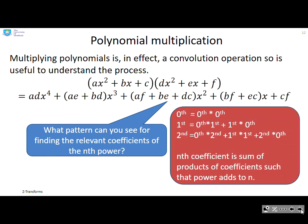The question you need to look at is what pattern can you see for the coefficients of the nth power? Let's look at the pattern. To get this coefficient cf, I've taken the coefficient of the nth power here and the coefficient of the nth power here. So nth times nth gives me the nth coefficient. What about the next one? I've taken the nth coefficient from one and the first coefficient of the other, and the first coefficient multiplied by the nth. So you've got the f times the b and the c times the e.